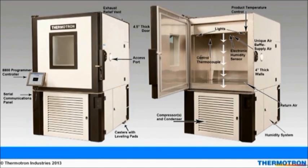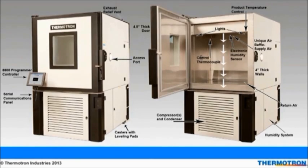Turning to the chamber on the right, let's start from the top. Looking to the inside of the chamber, you will see there are two lights allowing visual access to the inside of the chamber. On the ceiling of the chamber, you will find the movable product temperature control thermocouple, an electronic humidity sensor, and an air baffle that supplies the air over the product under test. The controlled thermocouple is also located on the ceiling. The white arrows represent the air flow as it is directly distributed over the product.